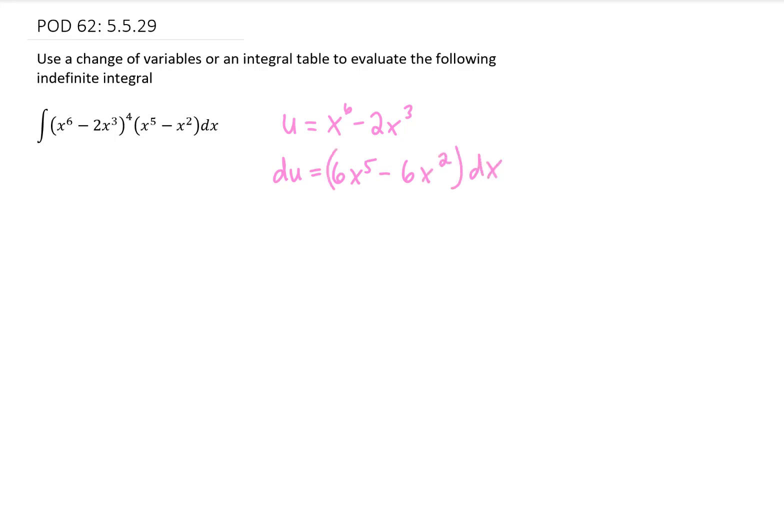And knowing that no matter what you choose for u in your integrand, you need to have a du in your integrand somewhere, we should be looking to see if we have this term here somewhere in our integral. And we do, and it's a little bit more clear that we have that. If you factor a six out of the right-hand side and divide both sides of this equation by six, you see that we have this x to the fifth minus x squared dx, which appears in our integral up here. And we now know that we can replace that with a one-sixth du.